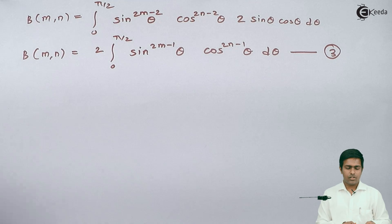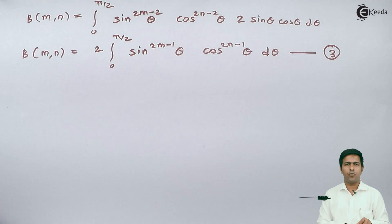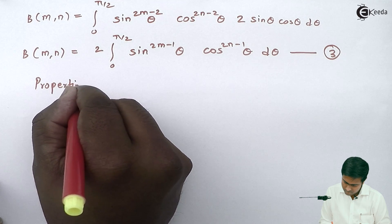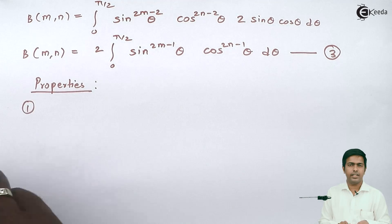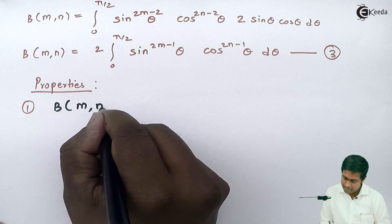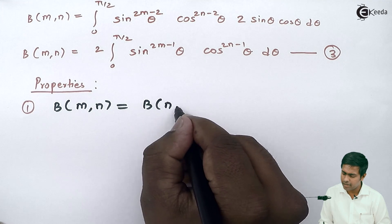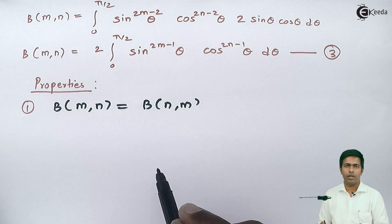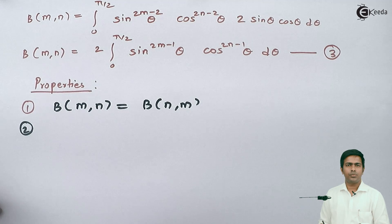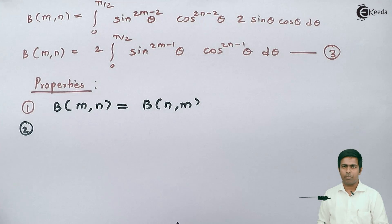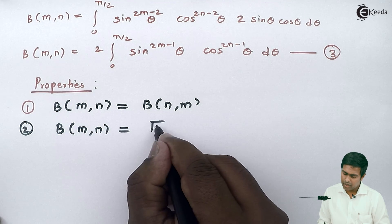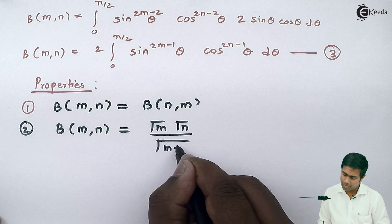Now let's see certain properties of the beta function that are useful for solving problems. Property 1: beta of m comma n is always equal to beta of n comma m. This symmetry property can be easily proved and is useful in certain problems. Property 2 is the relationship between the beta and gamma functions: beta of m comma n equals gamma(m) times gamma(n) divided by gamma(m plus n).